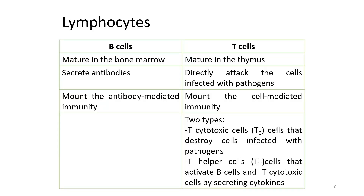Let us have a look at the difference between the two major lymphocytes in our immune response, which are B cells and T cells. Although both of these lymphocytes might look similar when observed under the light microscope, there are differences between these two cells in terms of the proteins or receptors they form on the surface of their cell membrane, their maturation site, their function, and also in which part of the lymph organ they reside after maturation.